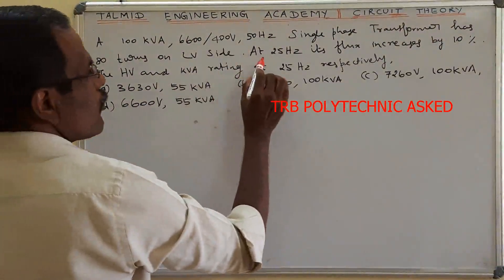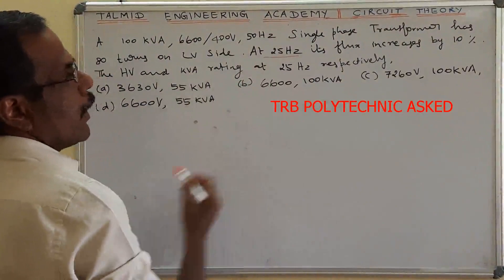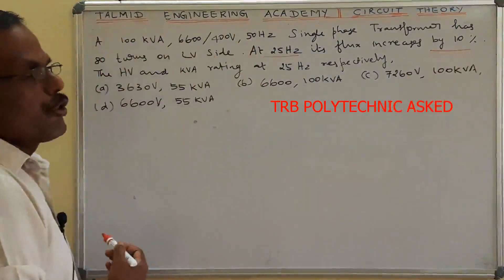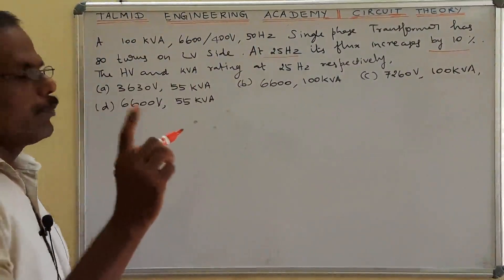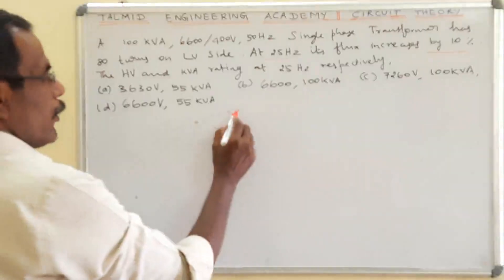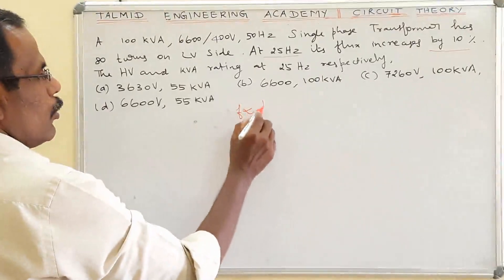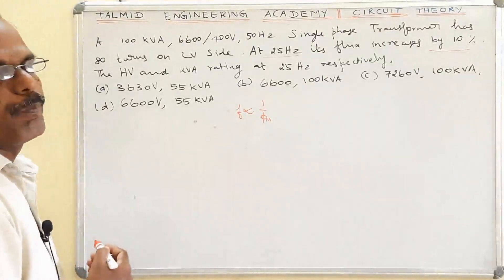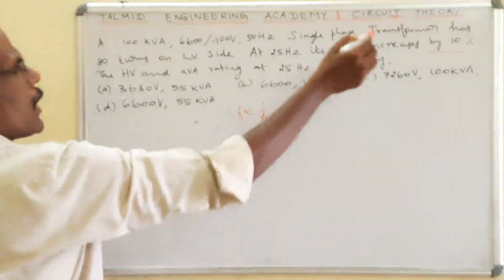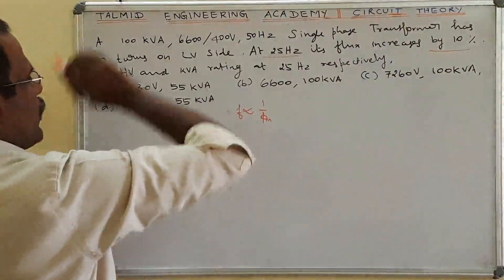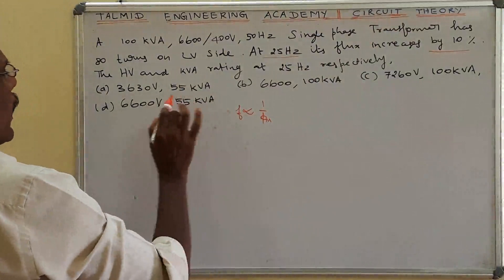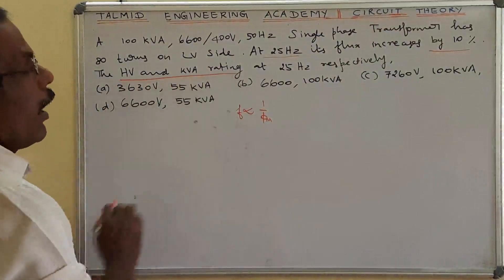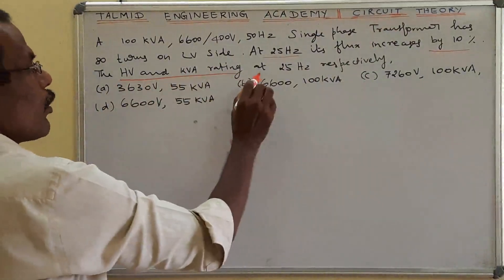The frequency will be reduced by 50 percent. Frequency is inversely proportional to flux — we know that. So when frequency decreases, flux increases by 10 percent. Now, what is the HV and kVA rating at 25 Hz?